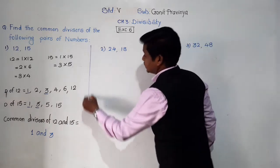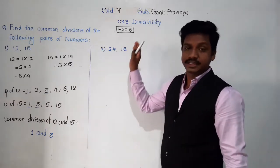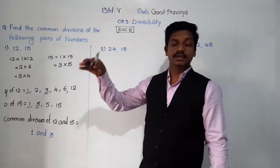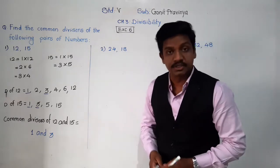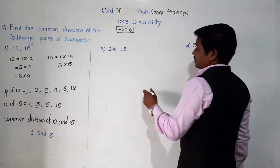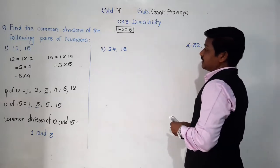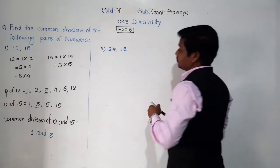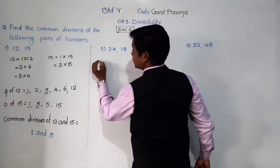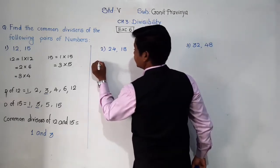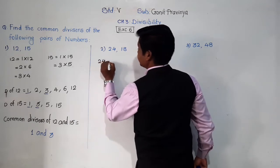So in this way we will find common divisors of any 2 or 3 numbers. Let's find common divisors of 24 and 18. First, find divisors of 24.